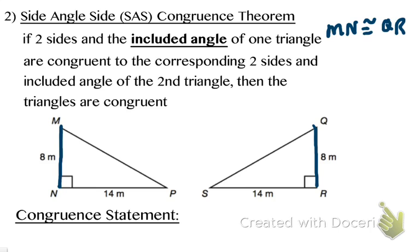Another labeled side is side NP, which is 14 meters long — I started at the right angle and went away from it. Side RS on the other triangle is also 14 meters. Since they're the same length, they're congruent, so NP is congruent to RS. That takes care of the side and the side. Now I need to talk about the included angle — notice the rule has 'included angle' bolded and underlined, because it's important.